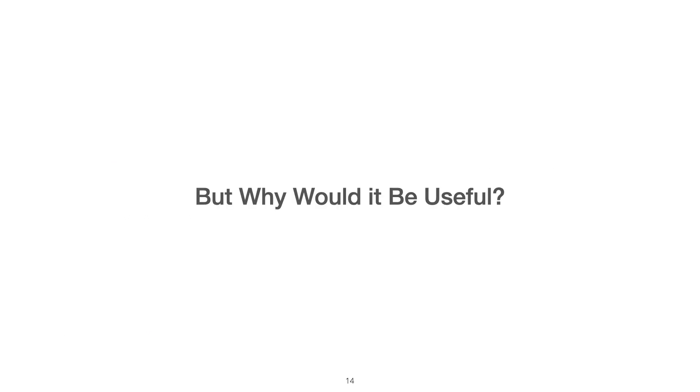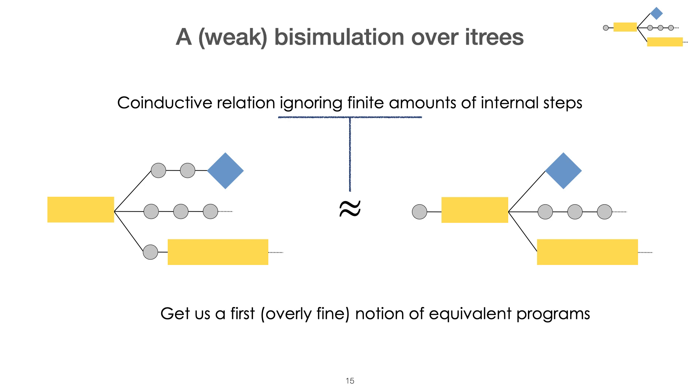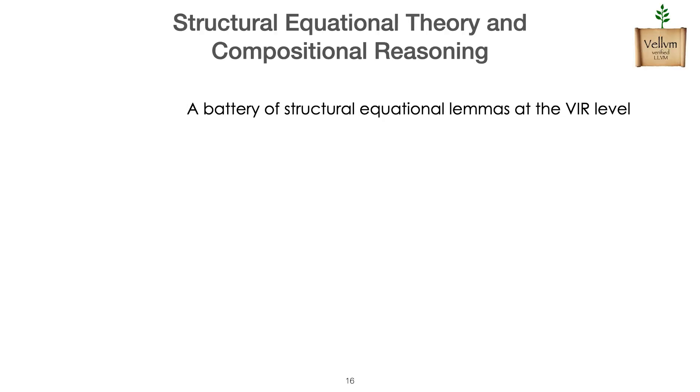Now this is about fidelity, the other question is whether this semantics is any more useful than the previous one. One reason we believe so, is that interaction trees come with a notion of weak bisimulation that greatly characterizes when two computational representative trees are equivalent. Through this representation function that we have, we therefore get the first notion of equivalence of programs. And this notion of equivalence of programs is playing well with the compositionality of the semantics, allowing us to have a battery of structural equational lemmas that characterize the semantics of the language in terms of its syntactic subcomponents.